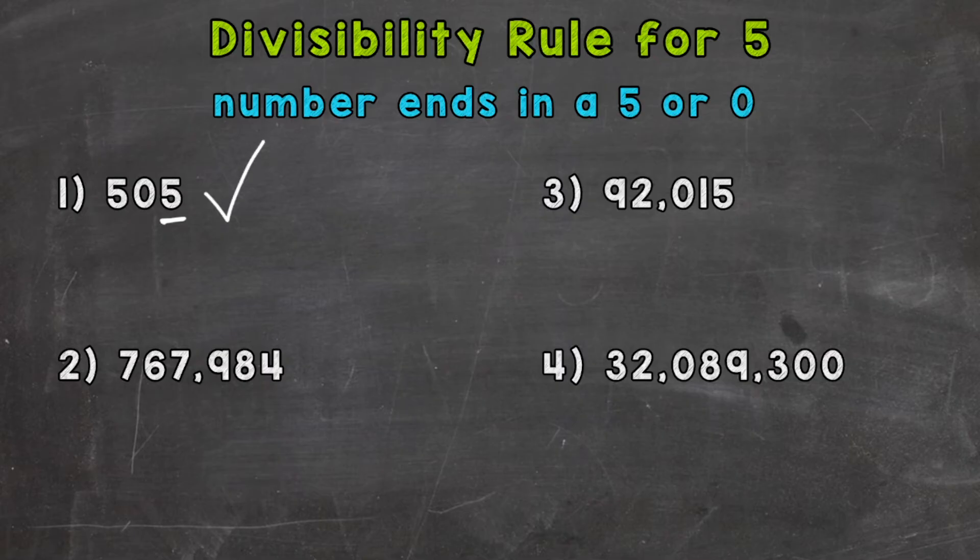Now number two, we have 767,984. Now that number ends in a 4. Therefore, that original number of 767,984 is not divisible by 5.